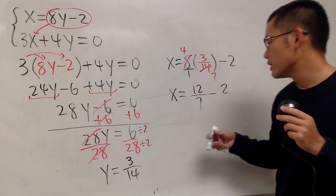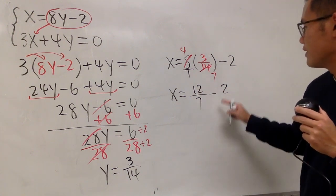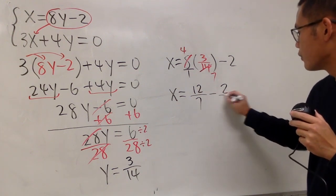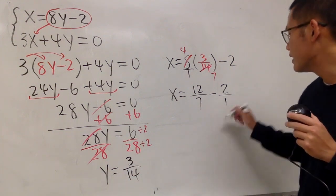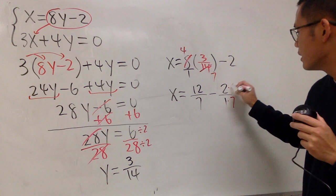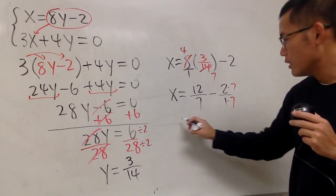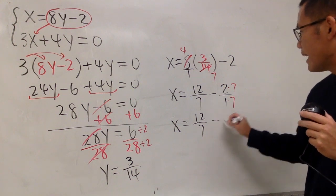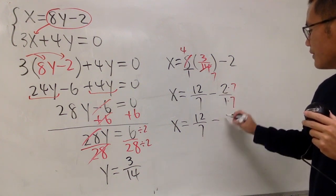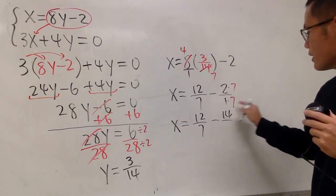Now, we have to subtract fractions. This right here is 12 over 7 minus 2. 2 is the same as 2 over 1. I need to get a common denominator, which is the 7. So, we see x is equal to 12 over 7 minus 2 times 7 is 14, over 1 times 7 is 7.